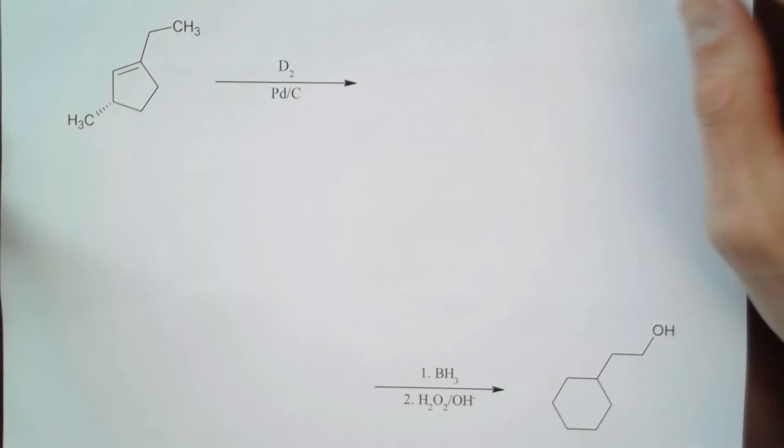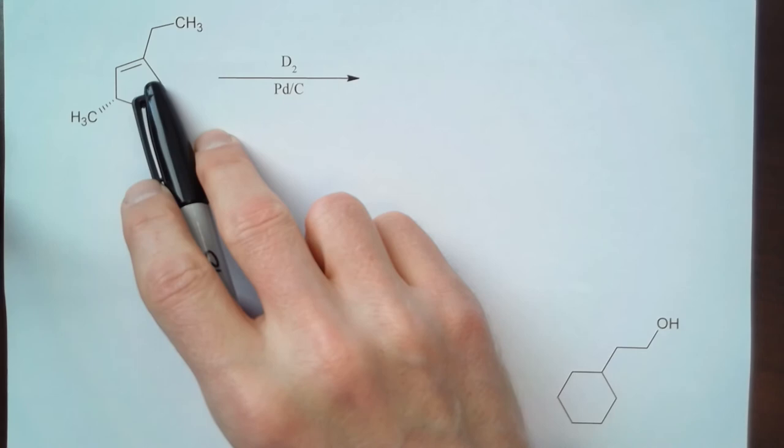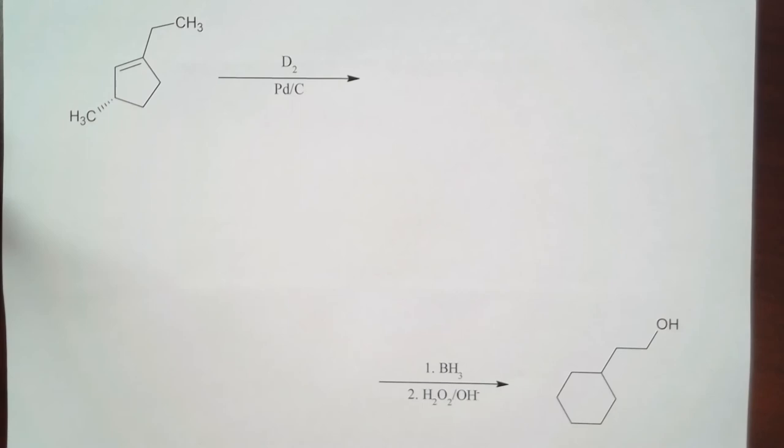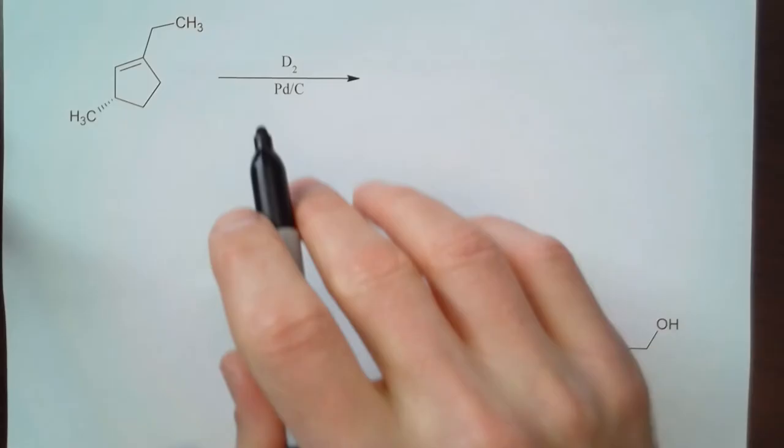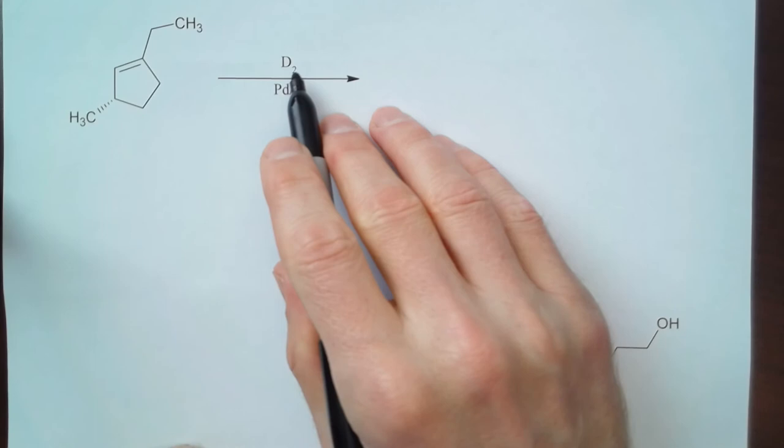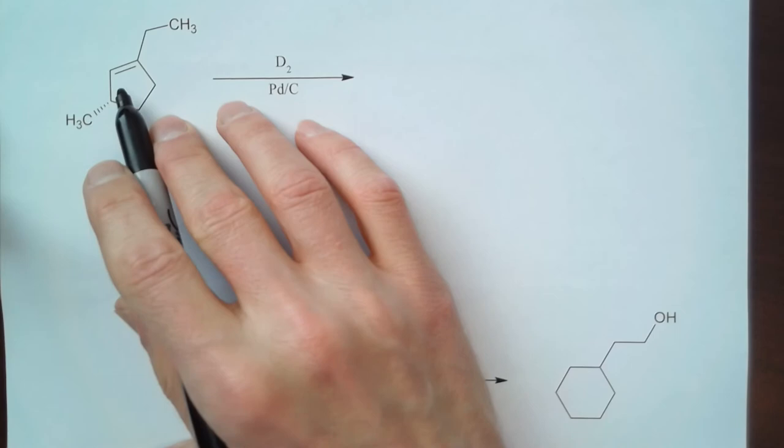In this one we're reacting an alkene with deuterium over a palladium catalyst. And remember deuterium is just an isotope of hydrogen. So when we react hydrogen over a palladium catalyst, we get syn addition to the double bond.